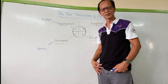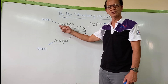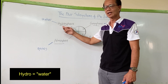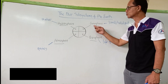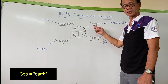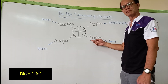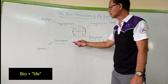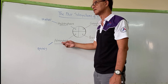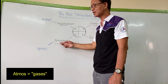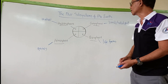It is important to remember the root words. For hydrosphere, the root word is 'hydro' which means water. For geosphere, the root word is 'geo' which means earth. For biosphere, the root word is 'bio' which means life. And for atmosphere, the root word is 'atmos' referring to gases.